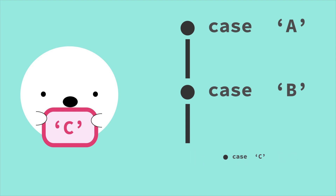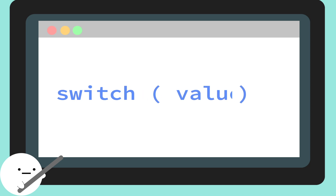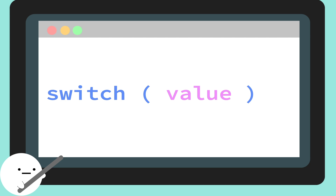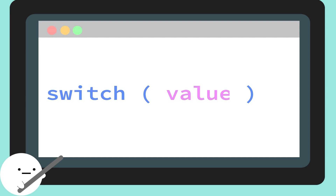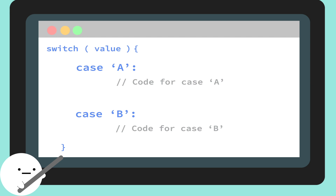To write a switch statement, first you initialize it with the word switch, then add a value that you want checked within a set of parentheses. You can check for things like numbers, words, letters, or variables. Then inside some curly braces you would add different cases with their own code to handle different outcomes. You have to make sure the values of your cases are the same data type as whatever you're checking for. So if you're checking a variable that has a character data type, your cases can only be identified with a character value.